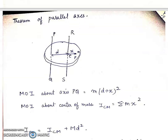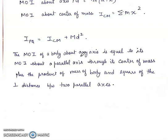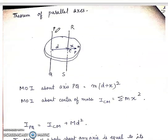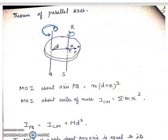Next is the theorem of parallel axis. It states that the moment of inertia of a body about any axis equals the moment of inertia about a parallel axis through the center of mass, plus the product of mass of the body and the square of perpendicular distance between the two parallel axes. So IPQ equals ICM plus M·d², where d is the distance between the two axes.